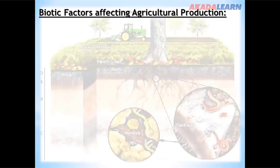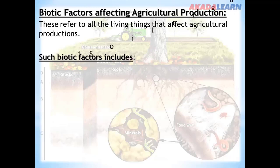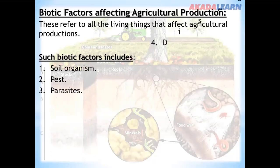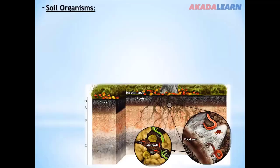Biotic factors affecting agricultural production — what are these biotic factors? Biotic factors refer to all the living things that affect agricultural production. They include soil organisms, pests, parasites, diseases, weeds, predators, and human beings. Let's start with soil organisms.